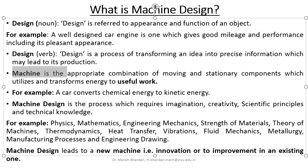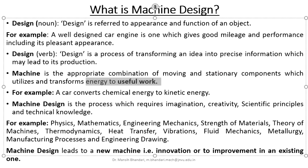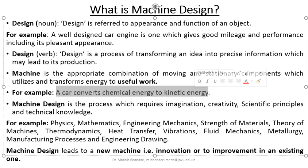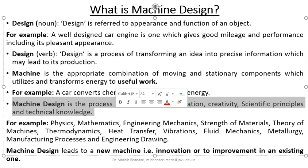If we try to understand the meaning of machine, a machine is the appropriate combination of moving and stationary components and linkages which utilizes and transforms energy to useful work. For example, a car converts chemical energy to kinetic energy — we supply fuel for chemical energy and get movement in return. So machine design is the process which requires imagination, creativity, scientific principles, and technical knowledge.